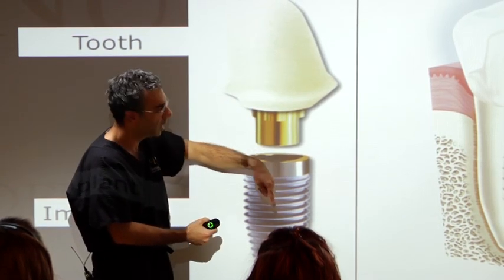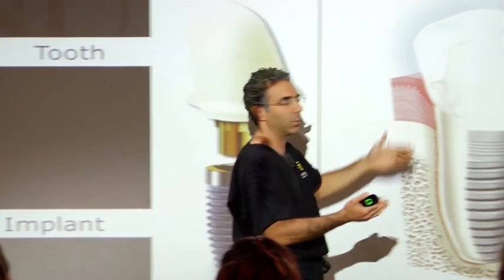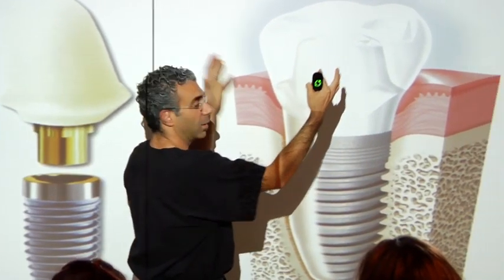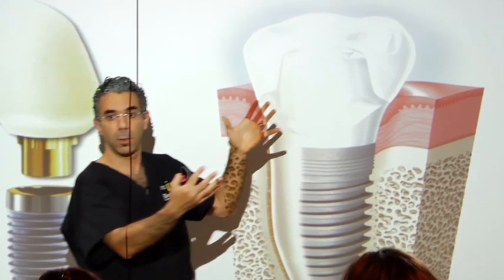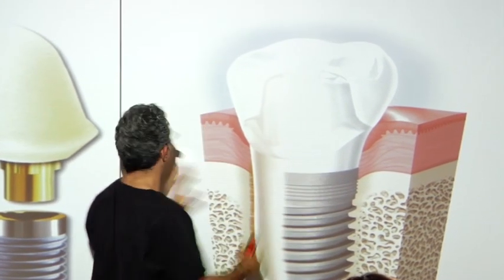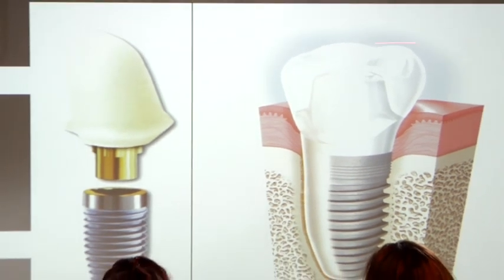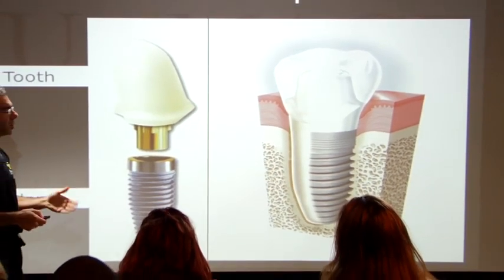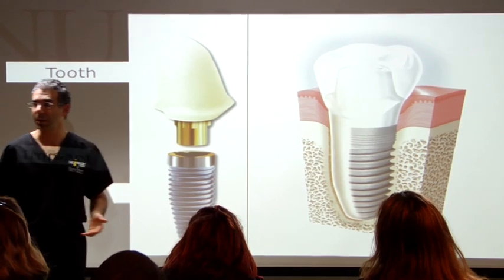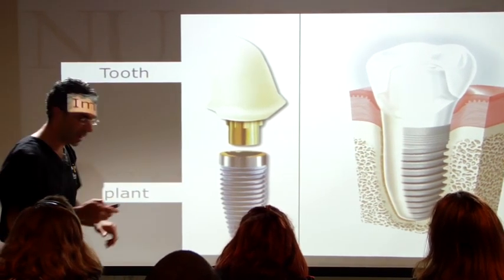Your general dentist will then take a crown, or cap as we know it, and place it right on top of that abutment. By the time we're done, over the months or years you won't know which tooth is an implant and which is not — and that's the beauty of this procedure. It looks and feels very natural.